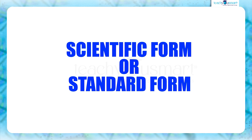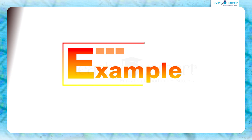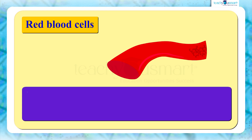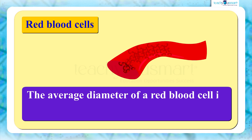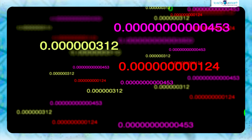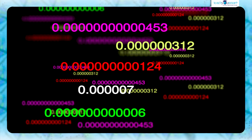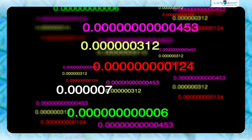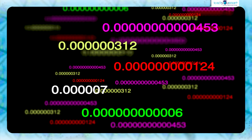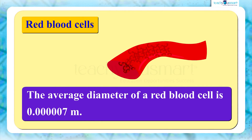In our daily life, sometimes we have to deal with small numbers. For example, the average diameter of a red blood cell is around 0.0000007 meters, which is a very small number. Dealing with small numbers can be challenging as they are difficult to write and read. However, expressing these numbers in scientific form makes it much easier to work with them. Let's look at the example of the average diameter of a red blood cell — how do we express this in scientific form?